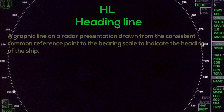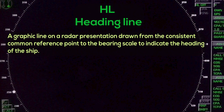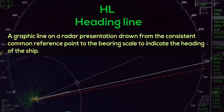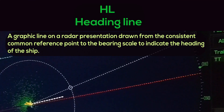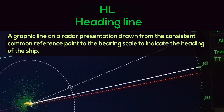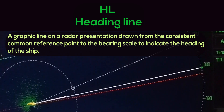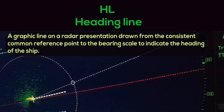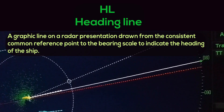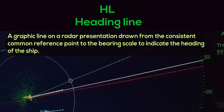HL — Heading Line: a graphic line on a radar presentation drawn from the consistent common reference point to the bearing scale to indicate the heading of the ship.